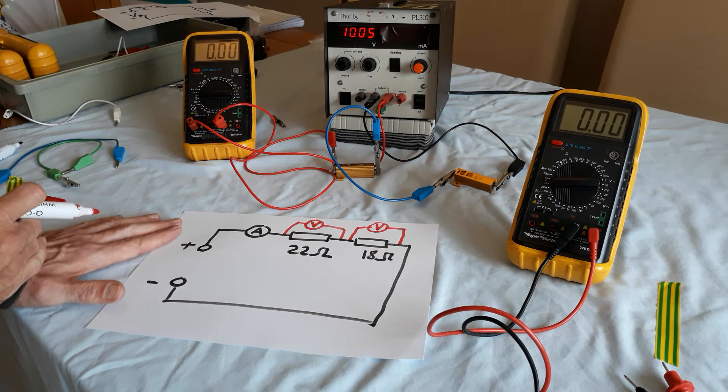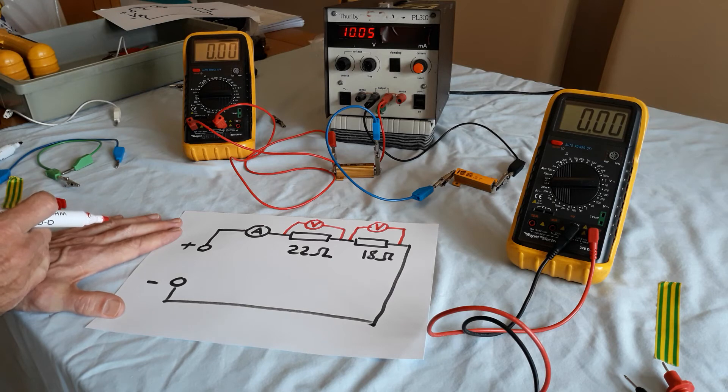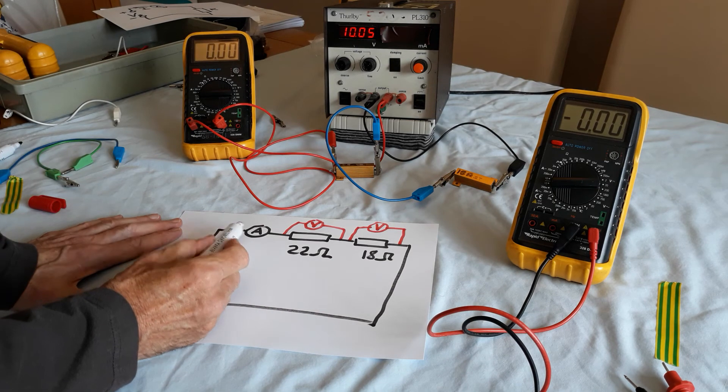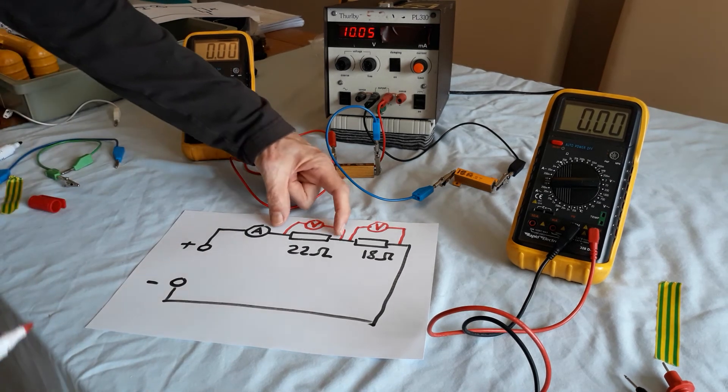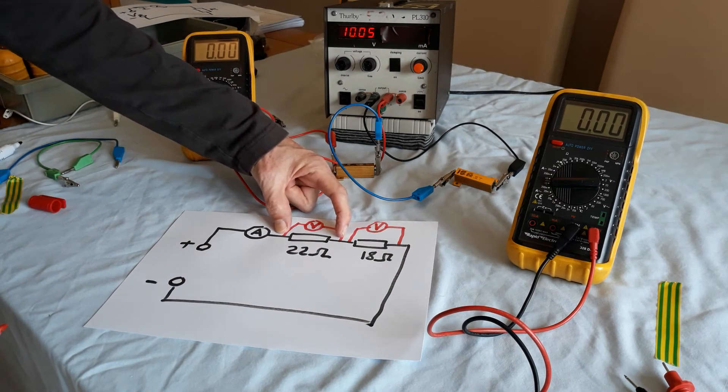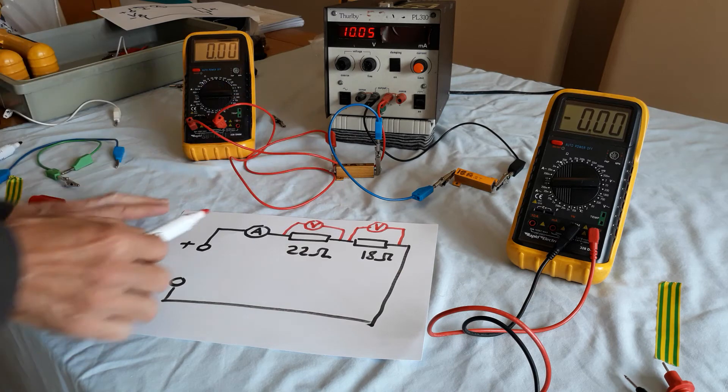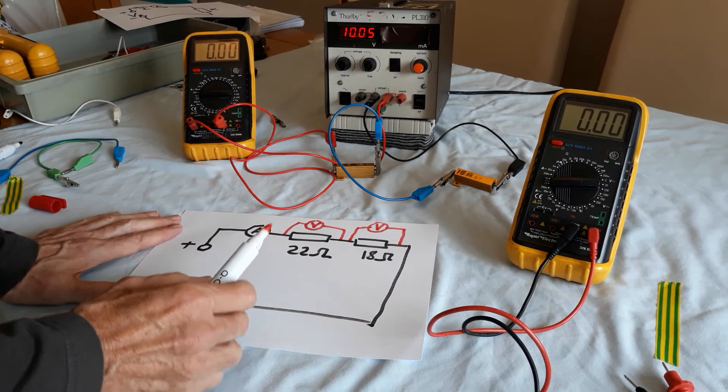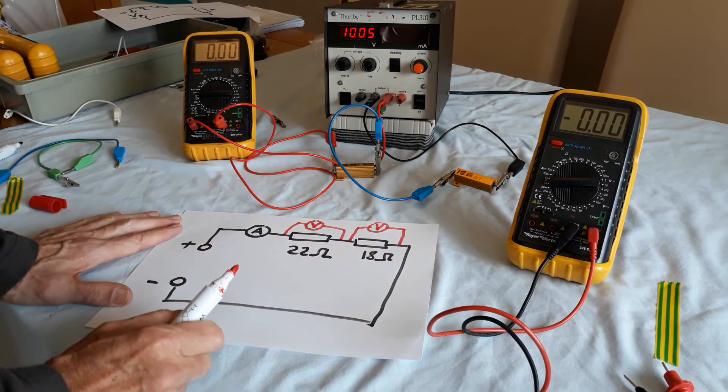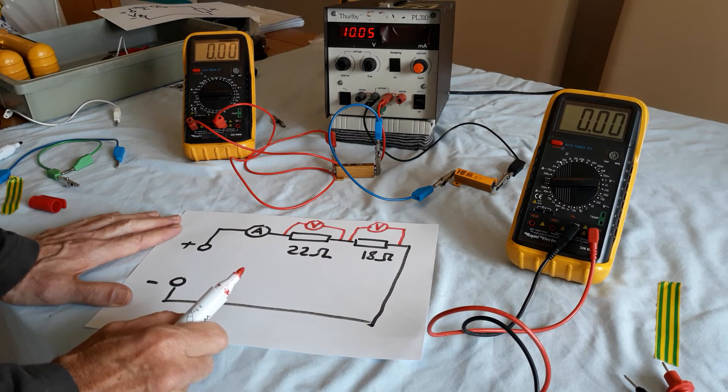So a couple of really important points at this stage: current goes through, voltage appears across. So the current flows through the circuit, and potential differences occur across different resistors. So the voltage is across.